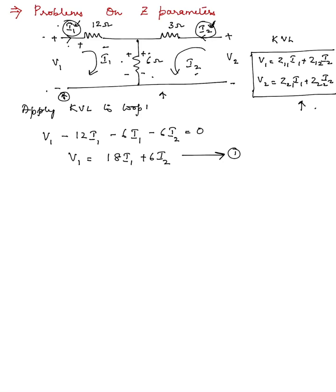Now you can check that equation 1 is in sync with the governing equation here. If you mention this as equation 3 and that as equation 4, equation 1 is in sync or has the same similar terms as that of equation 3. So we can find out Z11 and Z12 from equation number 1.